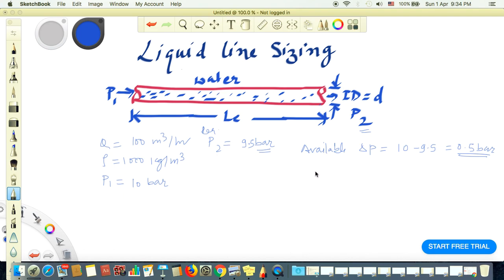There are two criteria to size a liquid line, two-phase line, or gas line. One is the pressure drop criteria, and the second is velocity - the fluid velocity inside the pipeline, which we limit normally between 1.5 to around 4.5 meter per second for continuous flow.